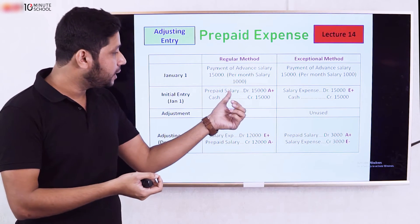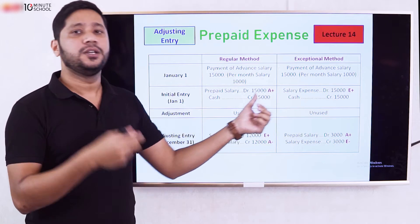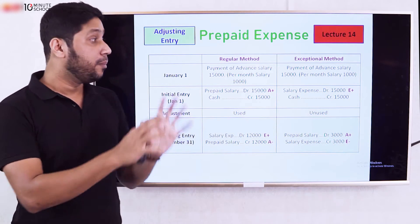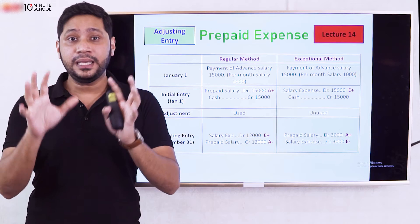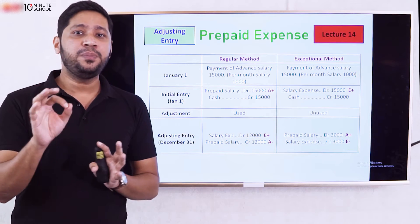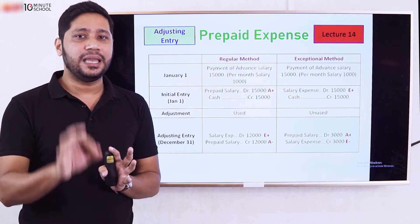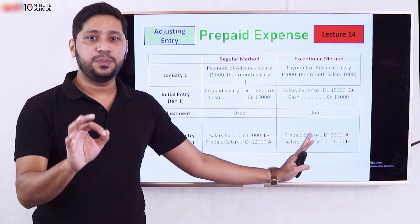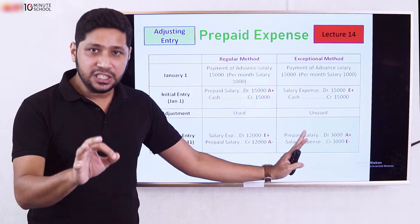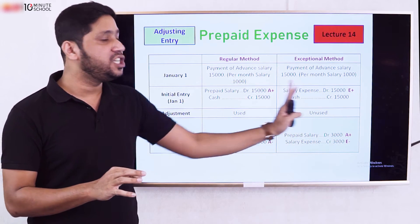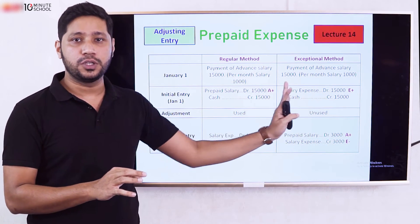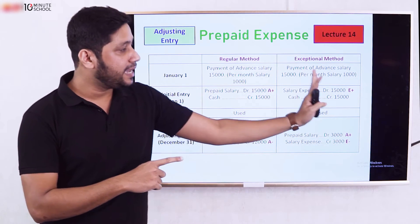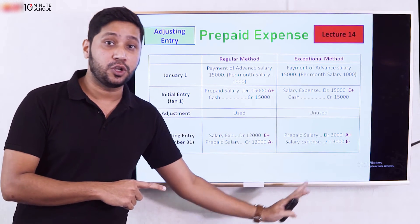The salary concept is the same as rent, interest, and commission — they all follow the same prepaid expense logic. In summary, for a prepaid expense adjusting entry, if the initial entry was recorded as an asset, the adjustment reduces the asset and increases the expense.